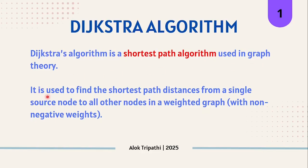That's what is written here. It is used to find the shortest path distances from a single source node to all other nodes in a weighted graph, and the condition here is that the weight should be non-negative.